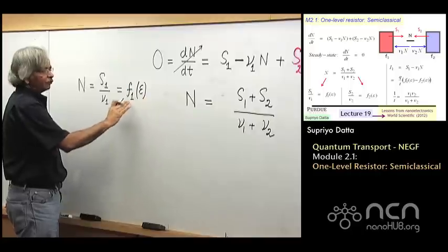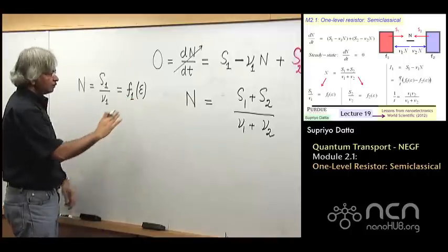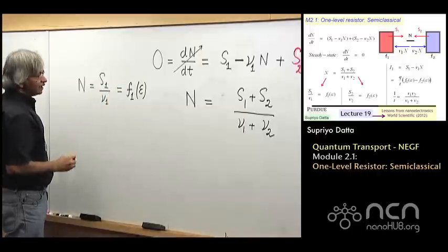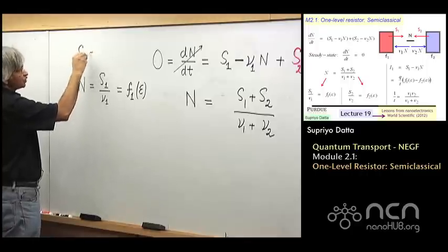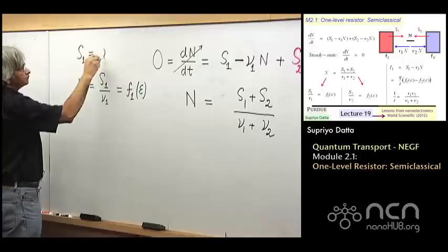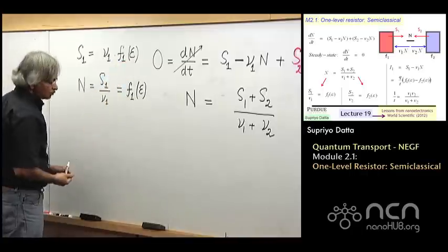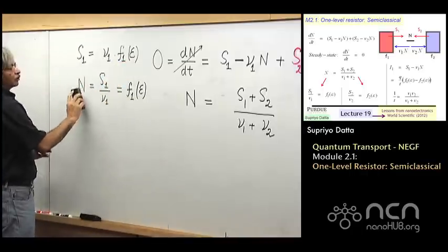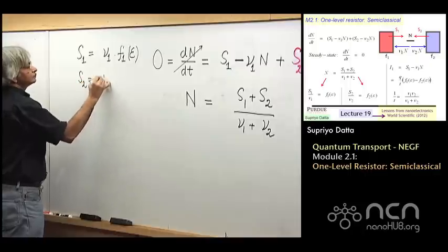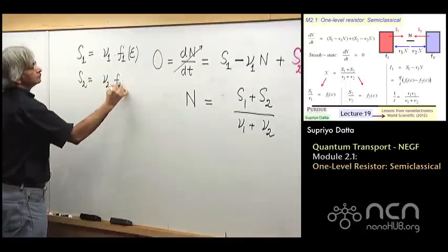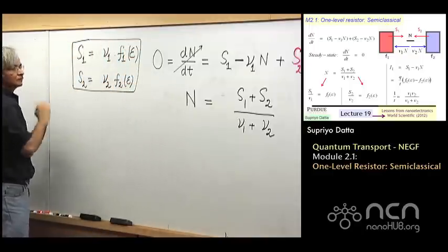So from here on, I won't bother to write the epsilon. I'll write f1, which means the Fermi function in contact 1 at energy equal to epsilon. So this then immediately relates for me the strength of this S1, strength of the source term, to this escape rate. And of course, you could make exactly the same argument for contact 2 as well.